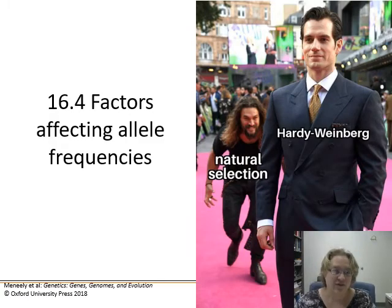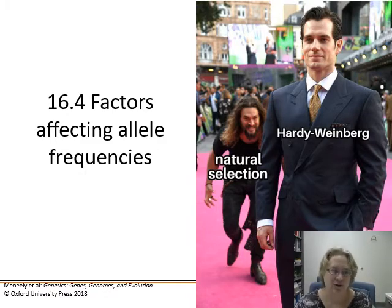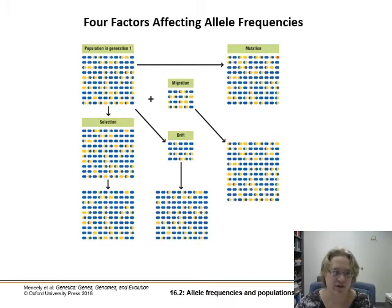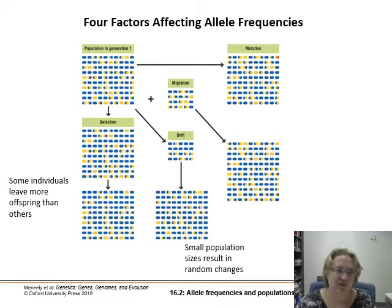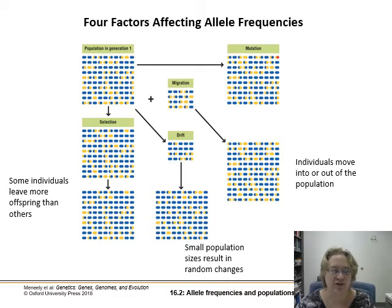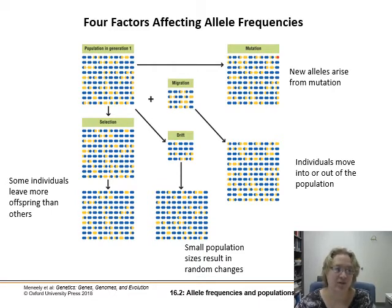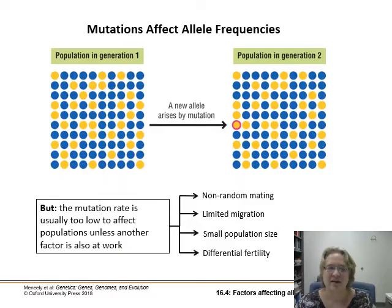Now we're moving to factors that affect allele frequencies — not just genotypes, but the actual gene pool itself. There are four main factors: differential fertility, where some individuals have more offspring than others; small population sizes, which result in random change; migration, where individuals move in or out of the population changing allele frequencies; and mutation, where new alleles arise and introduce a new option into the population.